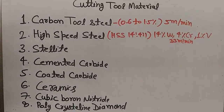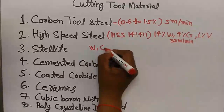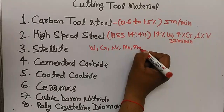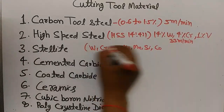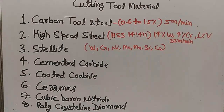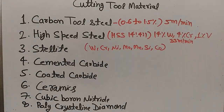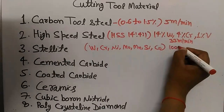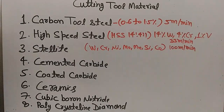Stellite is produced by a powder metallurgy process. Tungsten, chromium, nickel, molybdenum, carbon, manganese, silicon, and cobalt are mixed in powder form and then produced by the powder metallurgy process. The maximum cutting speed for stellite is 100 meters per minute.